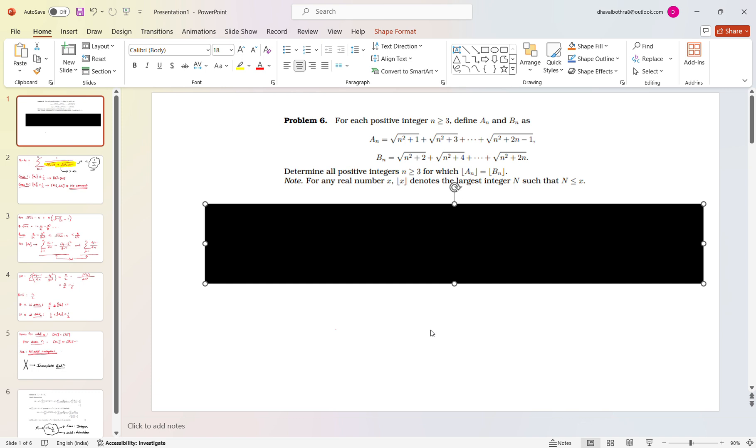So without any further ado let's proceed. Now I am hoping you have read the problem statement. This is based on two values, a_n and b_n. a_n contains the odd summations of roots and b_n contains the even summations of roots.